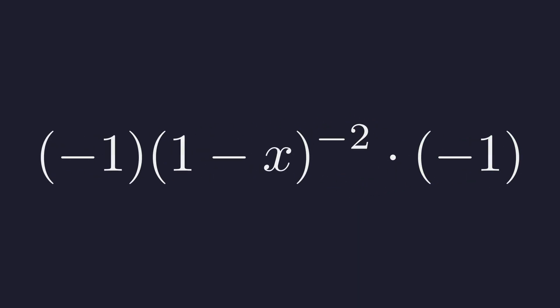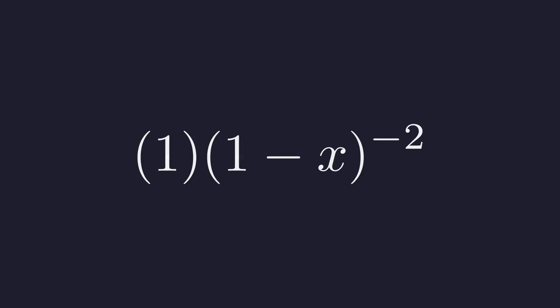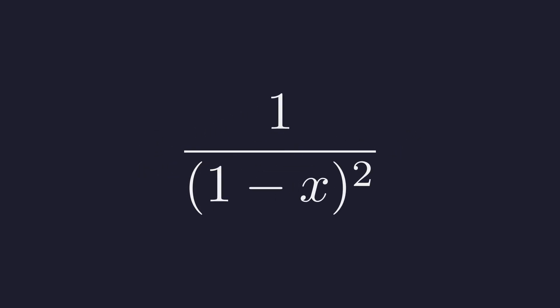Substituting this in gives us two negative 1 factors. These two negative 1 terms multiply to positive 1. This simplifies the expression. Finally, we can write this back in fractional form. And we get 1 over the quantity 1 minus x squared.